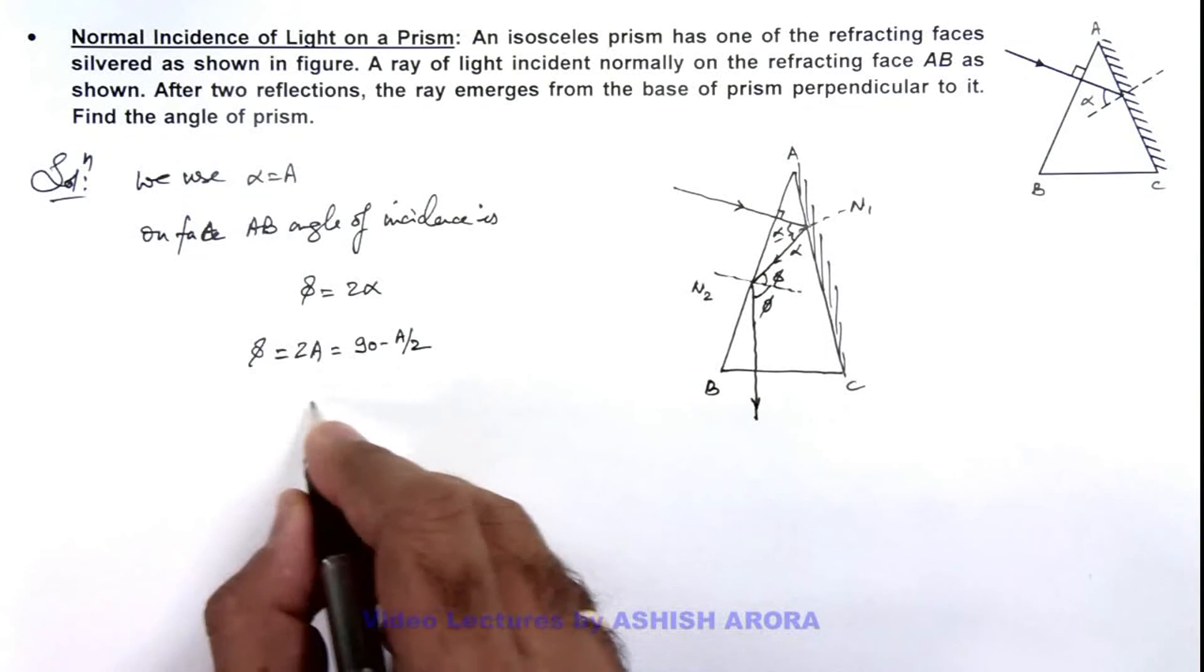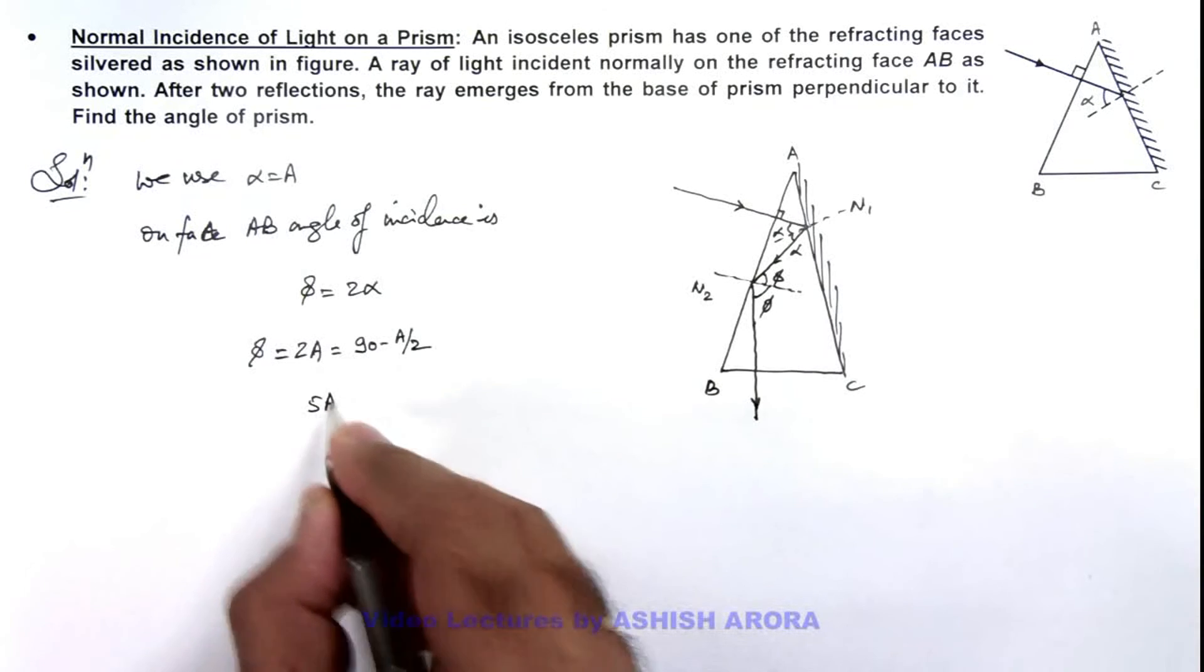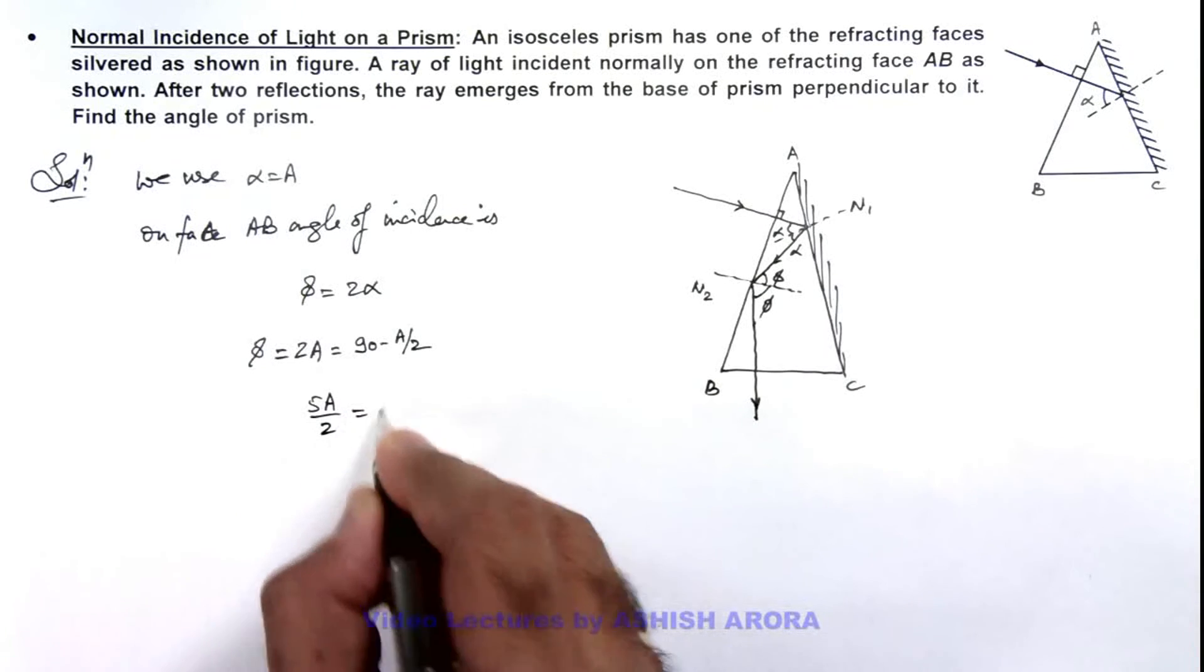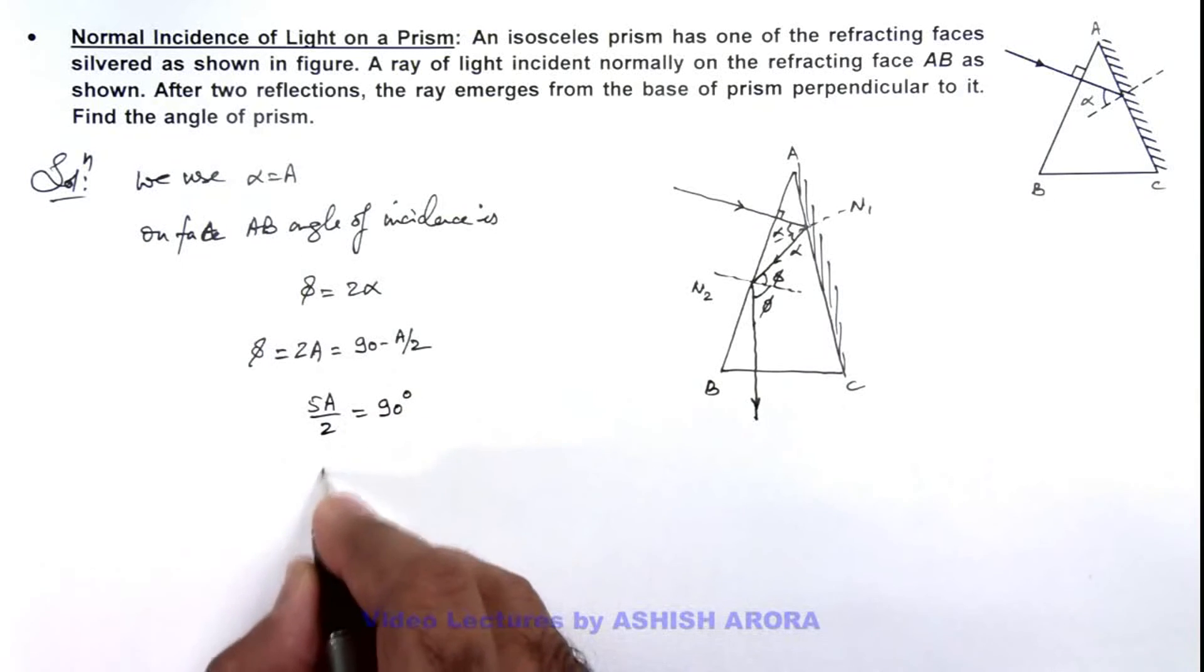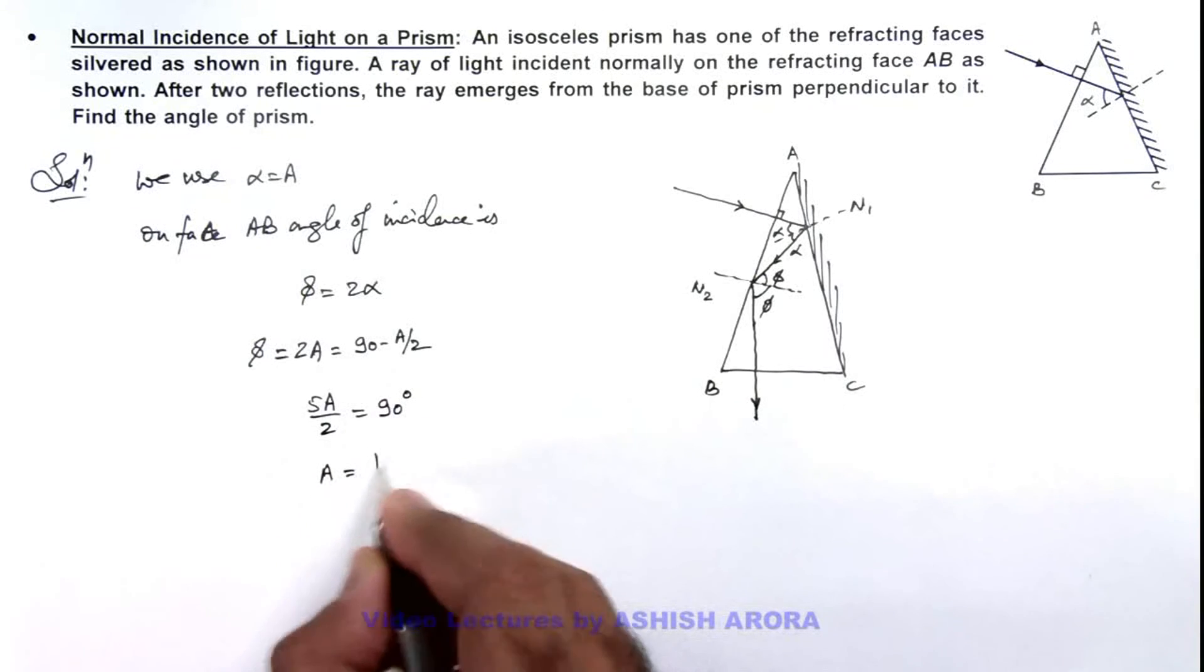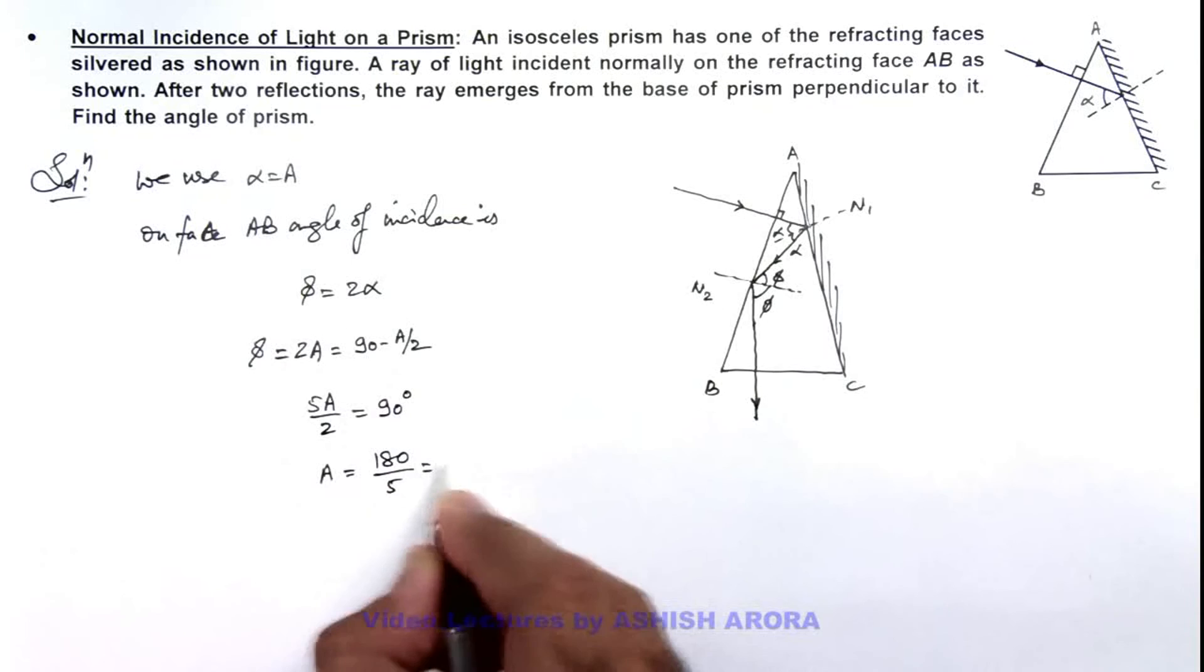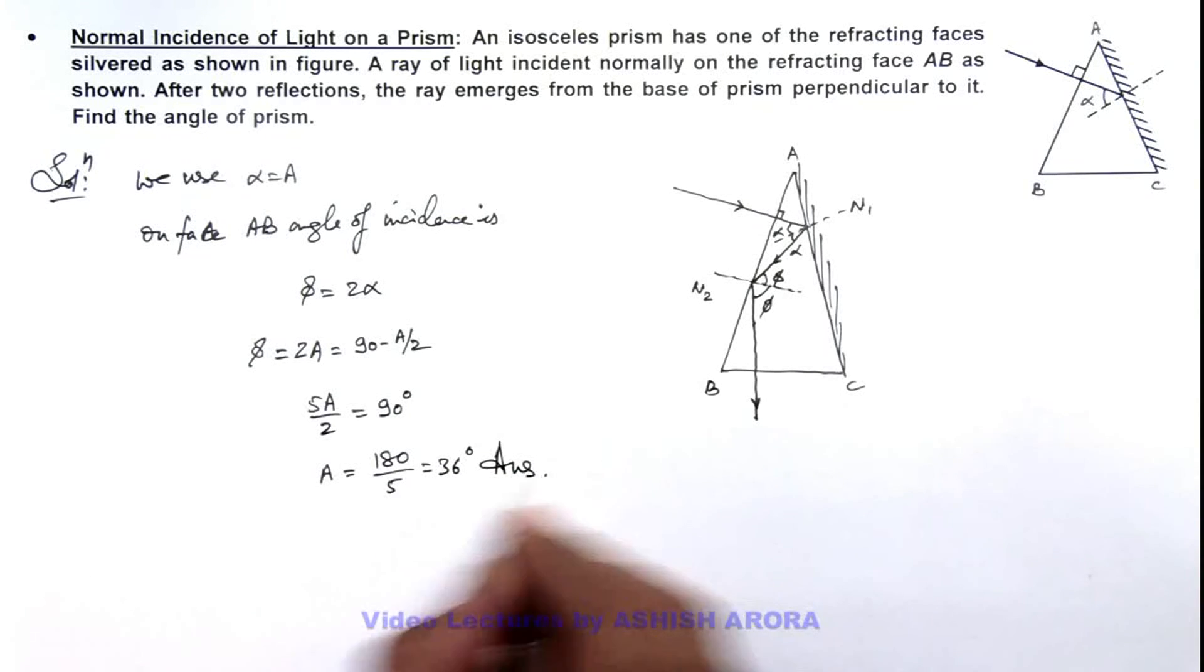So here this will become 5A by 2 is equal to 90 degrees. On simplifying we are getting the value of A is 180 by 5, that is equal to 36 degrees. That will be the result of this problem.